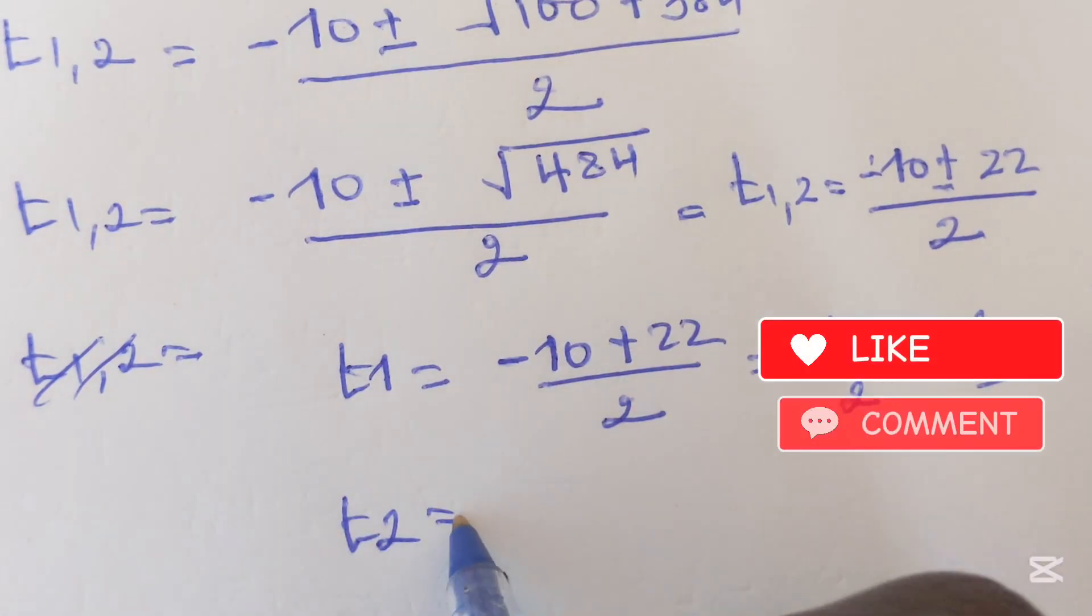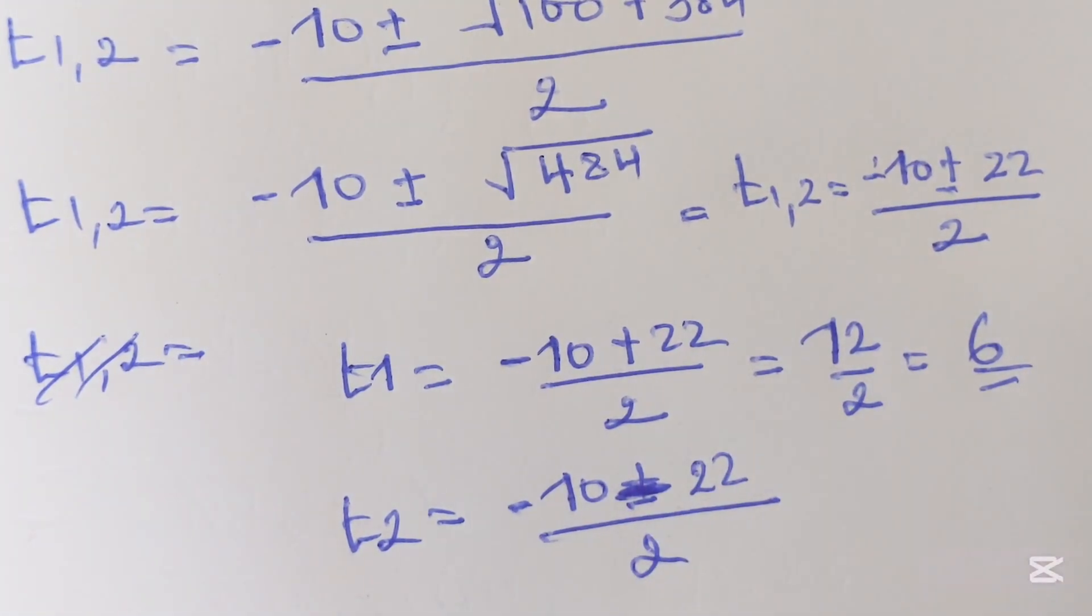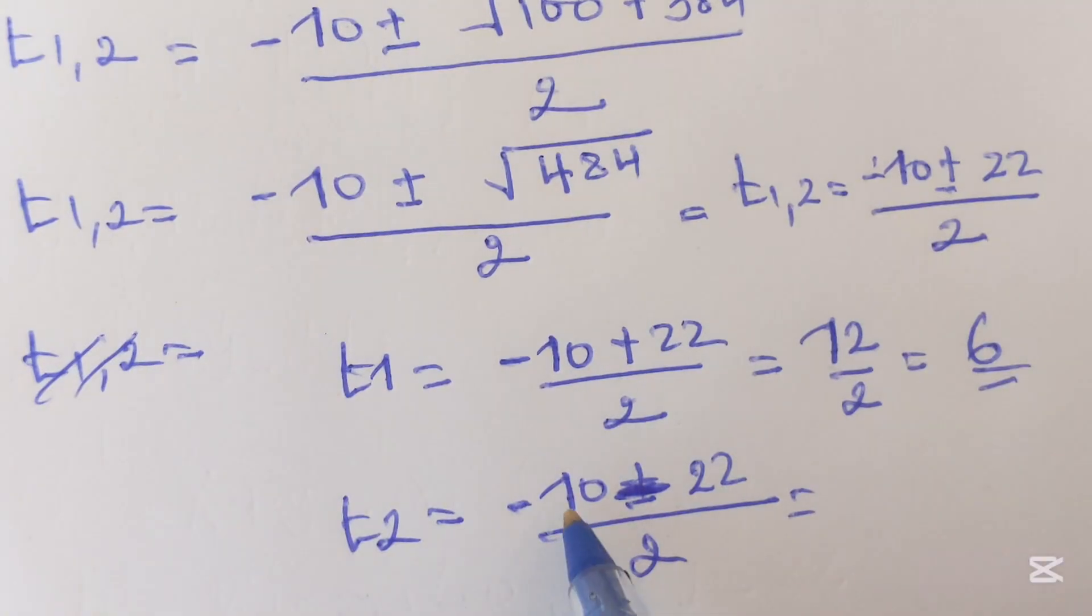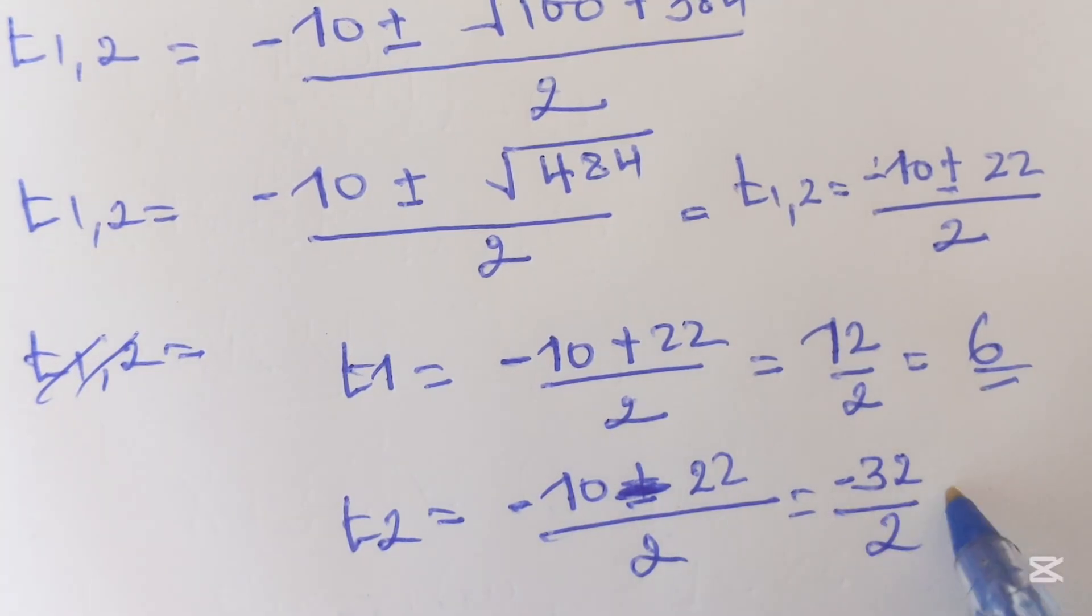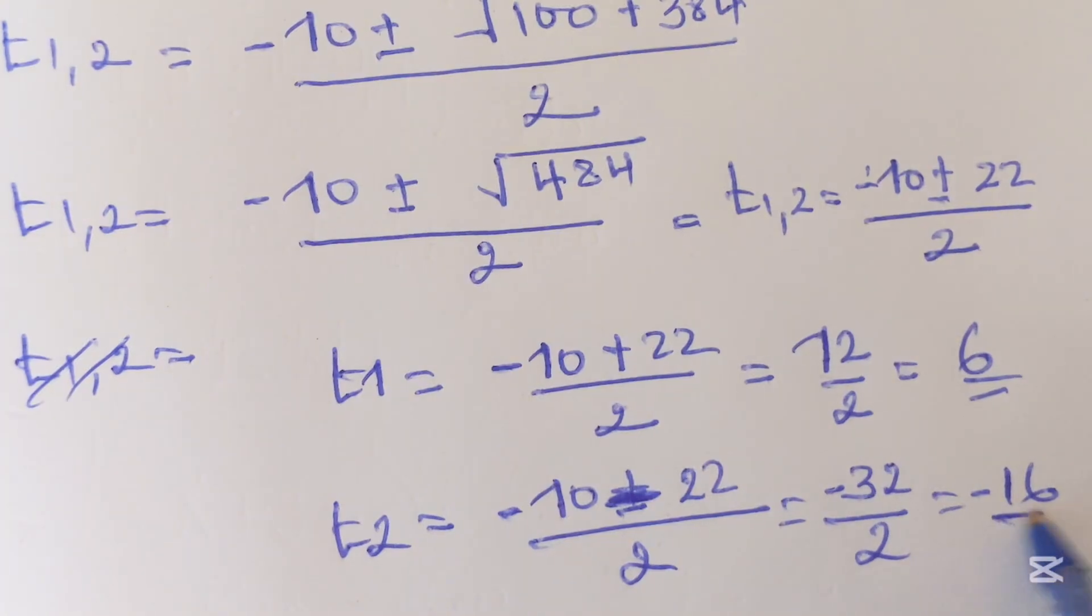t2 here equals negative 10 minus 22 over 2. This is negative 32 over 2 which is equal to negative 16. And of course here we have a value of t which is negative shall be rejected.